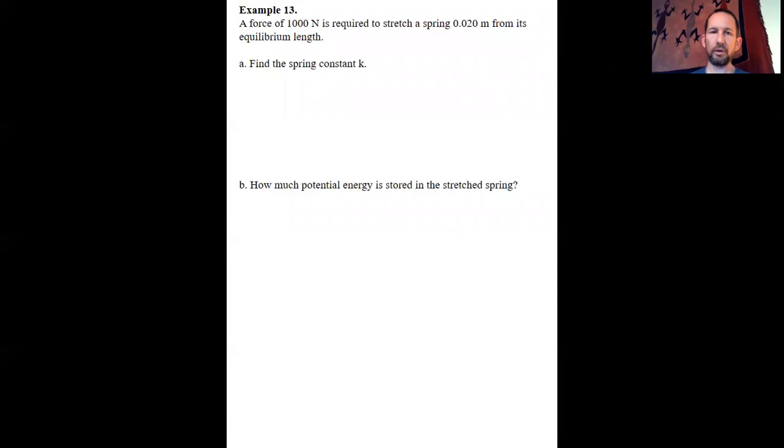So here you can see that we're given a force. So it is important to distinguish between PES which is equal to one-half k delta x squared and FS which is equal to minus k delta x. Force has units of newtons, spring potential energy has units of joules just like any other type of energy.